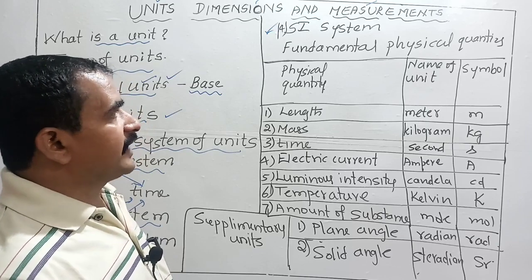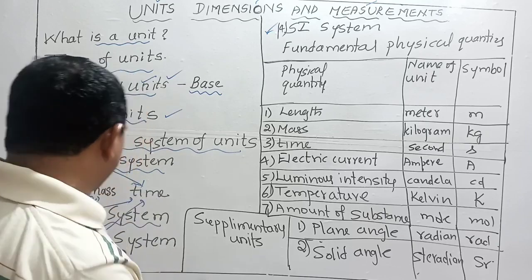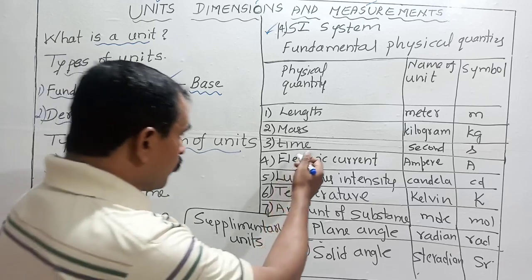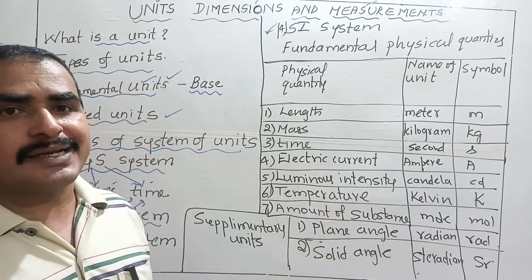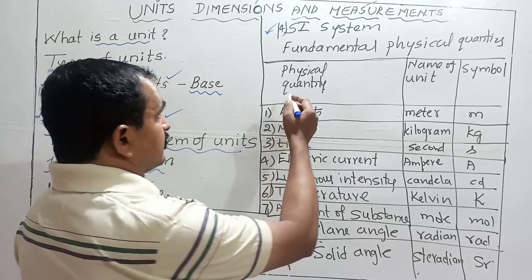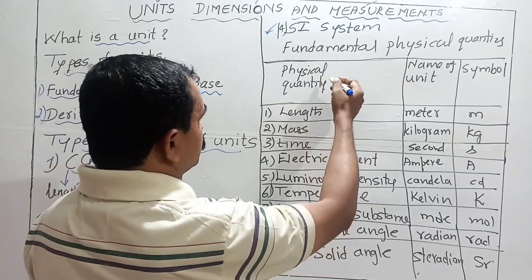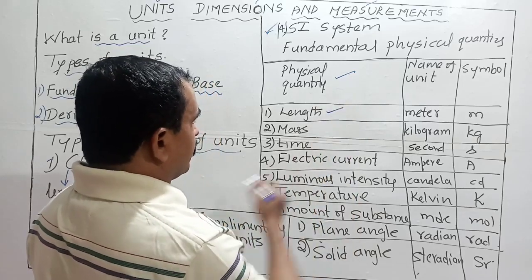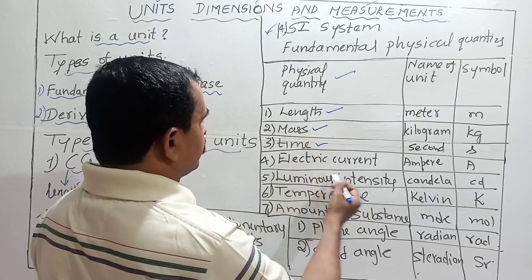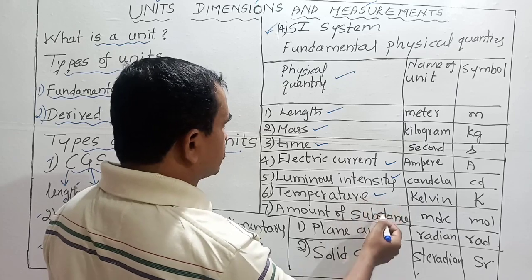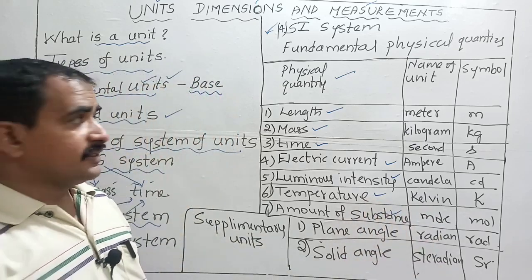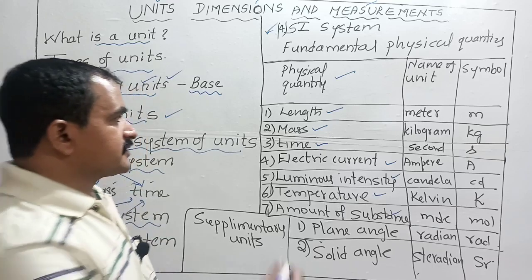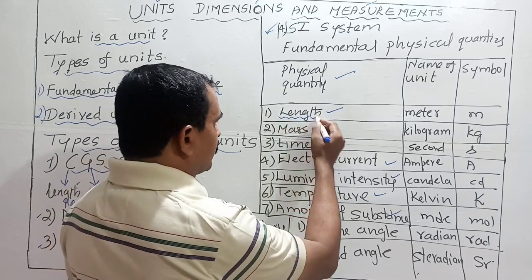The fourth system is the SI system — the International System of Units. Along with length, mass, and time, four additional base quantities were later added, making seven in total. The seven base quantities are: length, mass, time, electric current, luminous intensity, temperature, and amount of substance.